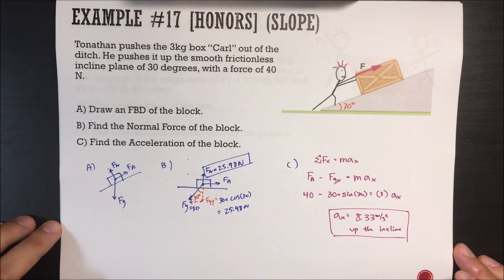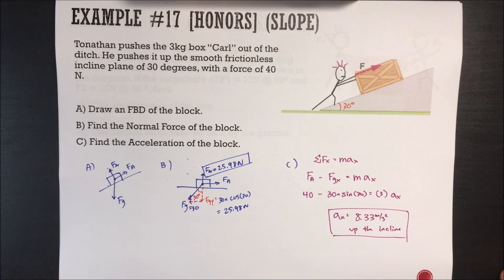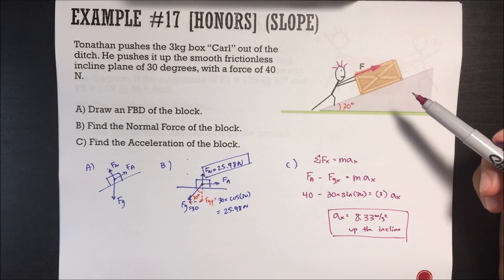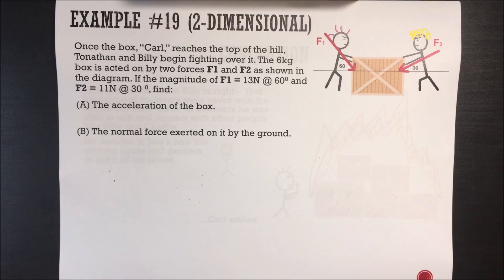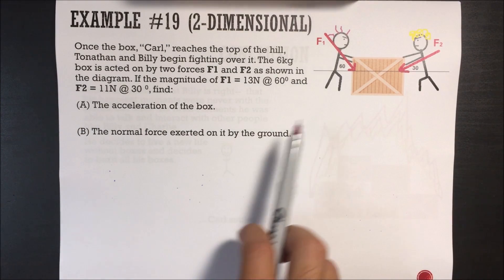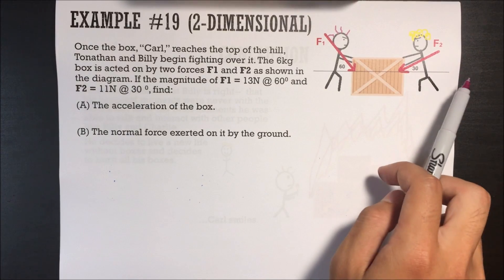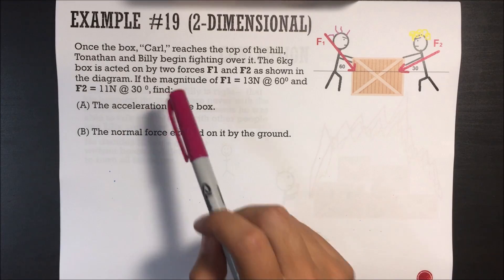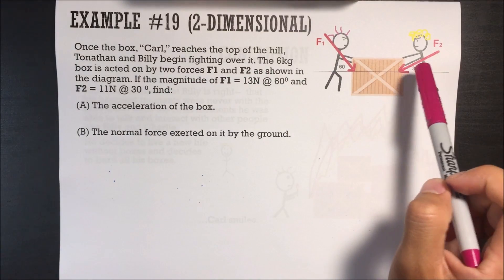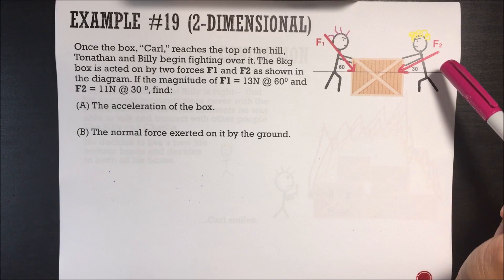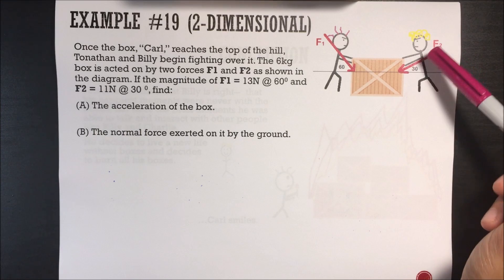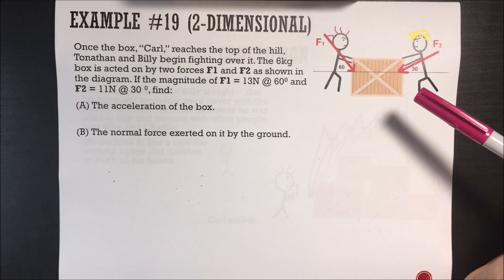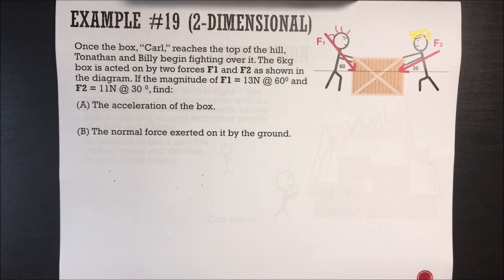When Tonathan pushes the box up the hill, Billy yells at him saying the box is not real. Once the box Carl reaches the top of the hill, Tonathan and Billy begin fighting over it. The 6 kilogram box is acted on by two forces, F1 and F2, as shown in the diagram. F1 is 13 newtons at 60 degrees, and F2 is 11 newtons at 30 degrees. Find the acceleration of the box and the normal force exerted on it by the ground.